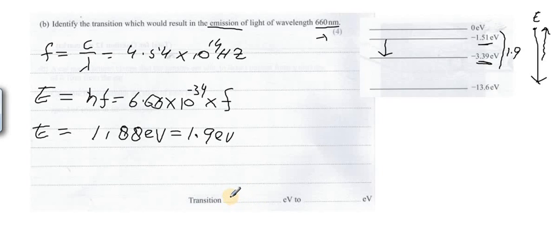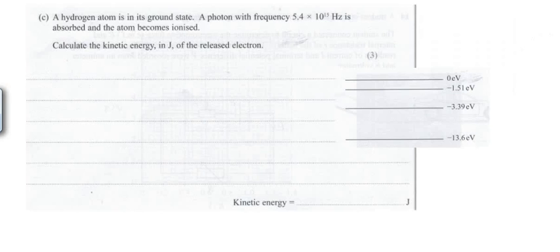So you can say that the transition is from minus 1.51 to minus 3.39 electron volts. This is part C.